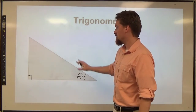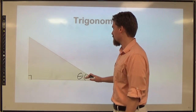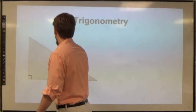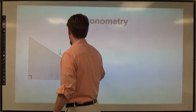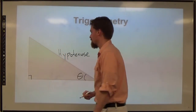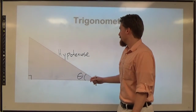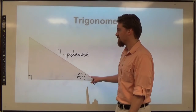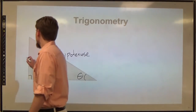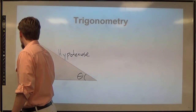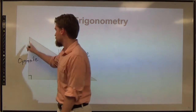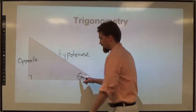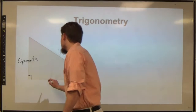I'm going to label each side a different thing so that we can refer to them. The side opposite the right angle I'm going to call the hypotenuse, or HYP for short. The side opposite this angle, whatever angle it happens to be, I'm going to call the opposite side. And then we have this side, which is right next to this angle, so I'm going to call that the adjacent side.